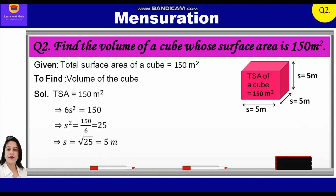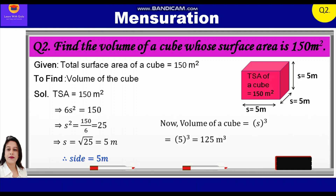Therefore, the side of this cube is equal to 5 meters. Further, the volume of the cube is equal to S³ = 5³ = 125 m³. Therefore, the volume is equal to 125 m³.